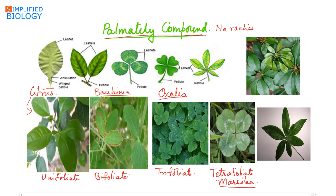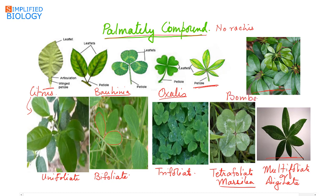When there are more than four leaflets — five, six, or many — it is known as multifoliate or digitate. An example is Bombax, commonly referred to as the silk cotton tree.